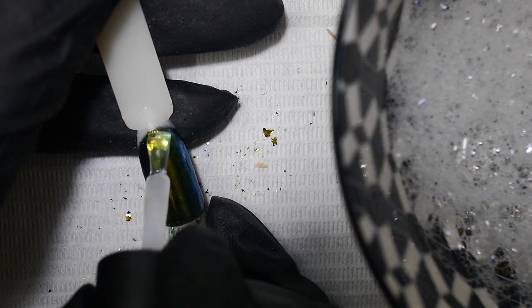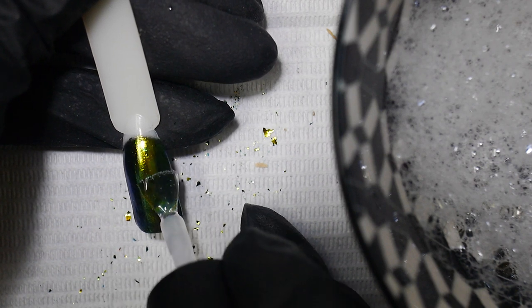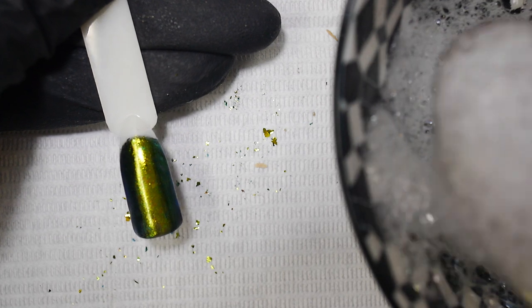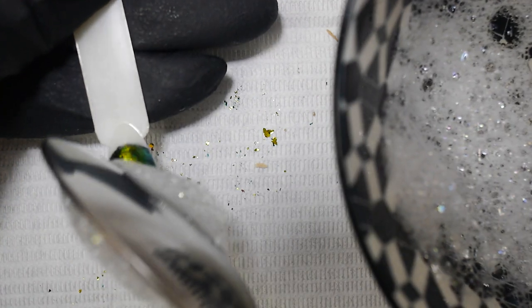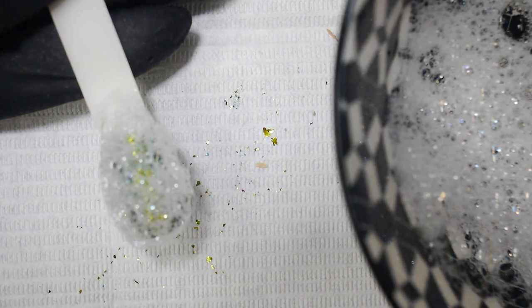So to the nail, over that cured top coat, you're going to apply a non-wipe top coat. And while it's still wet, apply a decent layer of bubbles straight onto the wet top coat, making sure they entirely cover the nail. And pop this into the lamp, bubbles and all, for a normal cure.